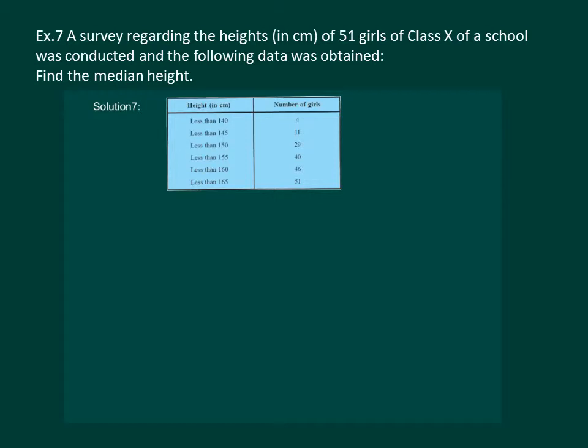To calculate the median height, we need to calculate the class intervals and the corresponding frequencies. Let us draw a table. Now, since the given data is of less than type, so 140 is the upper limit of the corresponding class interval.